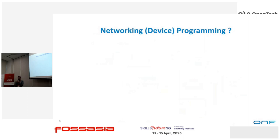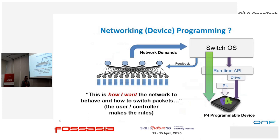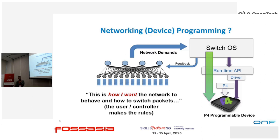Now the question is: can we have the same for the network? So basically, it's very similar. I have a network — it can be 1D5, 2D5, or 141. I have my own networking logic, and I want to set the behavior of the network, including the behavior of packets coming and going. I define how the packet behaves, then translate that into the programming language, and move it into the OS. We need some compiler, driver, or runtime to connect correctly with hardware. The idea is very similar to what we have in computer and mobile device programming.